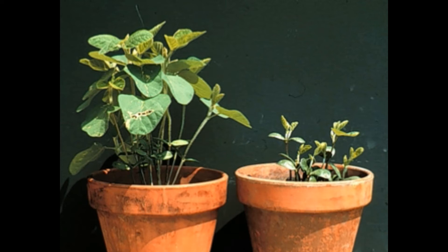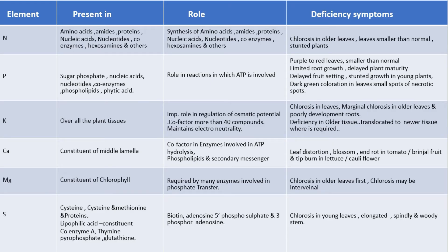The second most important element is phosphorus. Phosphorus is mostly present in ATP, which is an energy molecule. It is also present in sugar-phosphate, nucleic acids, nucleotides, coenzymes, phospholipids, and phytic acid. Wherever ATP is involved, there is a function of phosphate.